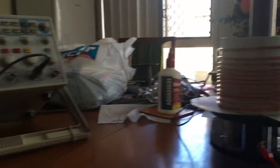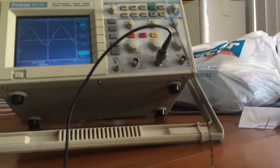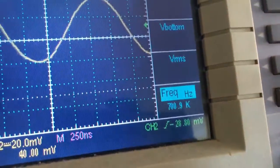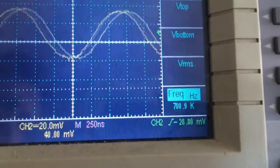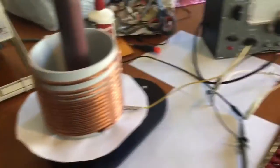So here I've got the signal generator connected to the bottom of the secondary and an antenna connected to a scope to find the resonant frequency of the secondary with the primary in place and top load attached, and you'll see that it's around 700 kilohertz.